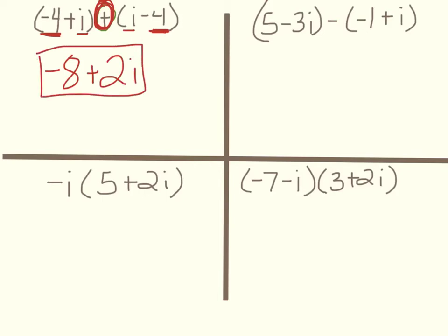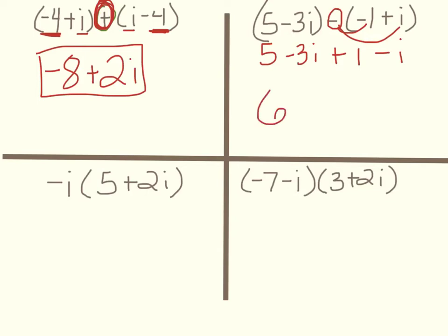This next one has subtraction — always distribute your minus sign. We're looking at 5 minus 3i minus negative, which becomes plus 1 and then minus i. So we combine our reals first: 5 plus 1 is 6. And then we combine our imaginaries: negative 3i minus i is negative 4i.